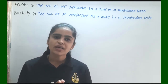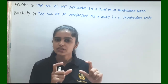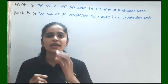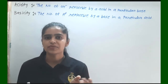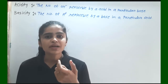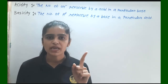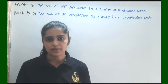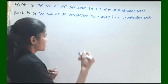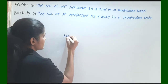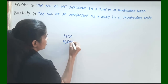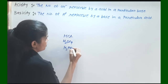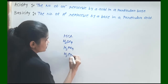How to define the different acids? For different acids, it is basicity, and for different bases, it is acidity. Remember that it is the acidity of a base and the basicity of an acid. For example, consider HCl, H₂SO₄, H₃PO₄, and H₃PO₃.